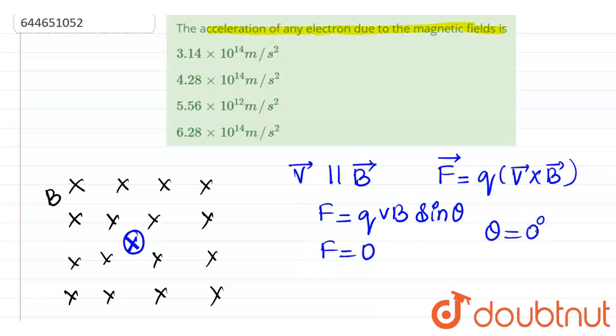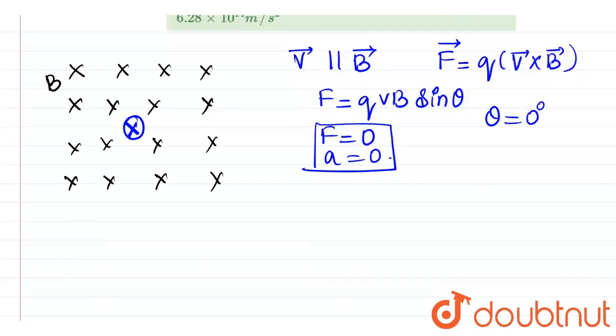So in the first case, as force is 0, acceleration will also be equal to 0. So in this case, there is no point in finding out the acceleration. Next, we will try to find out any other direction in such a way that I am projecting my charge particle in such a way that it is perpendicular to the given magnetic field.